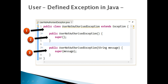Step 2: create a default constructor which calls the super class exception constructor. Step 3: create a parameterized constructor by passing in a string message. This string message is conveyed to the user that something is wrong — say for example, user is not authorized by the application. It should call the super class constructor by passing in the message to it.